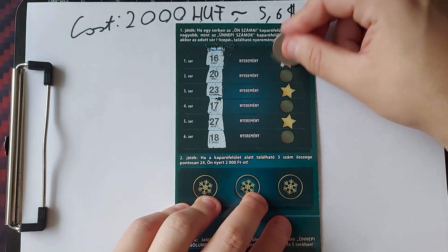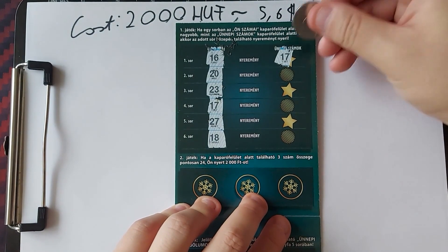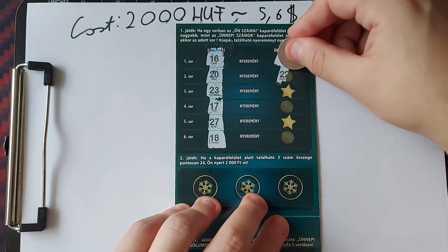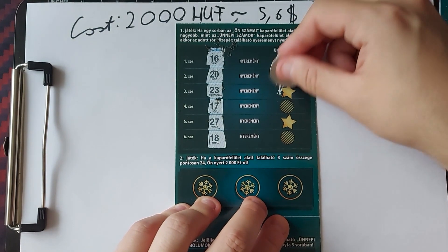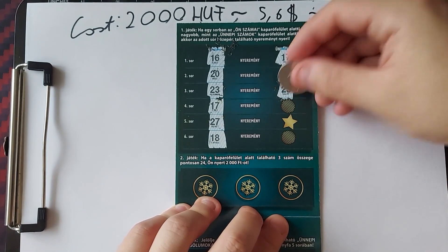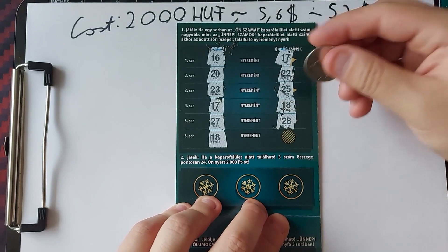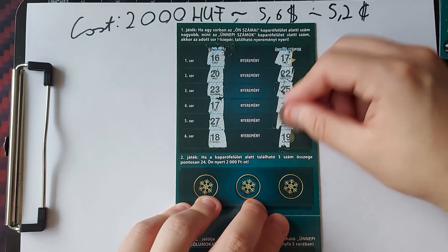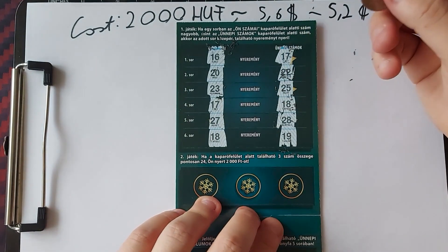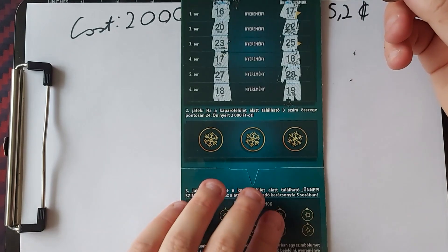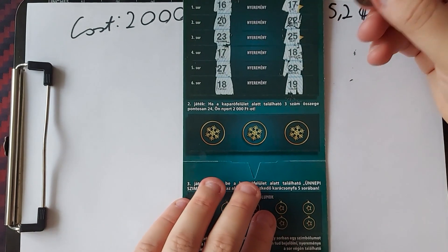So, the festive numbers are 17, no win, 22, no win, 25, no win, 18, no win, 28, no win and 19, of course, no win on this one.